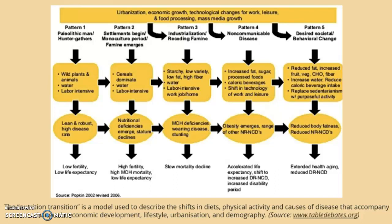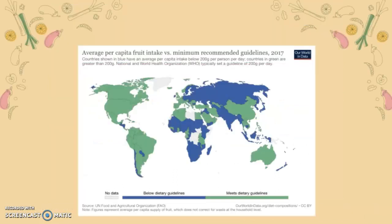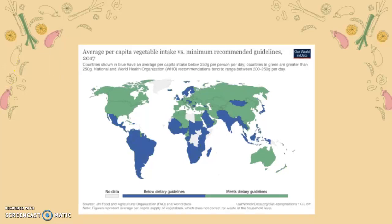Looking at patterns of nutritional intake, the average per capita fruit intake versus minimum recommended guidelines shows countries below dietary guidelines are centralized in Asia, Eastern Europe, parts of Africa, and some of South America. For average per capita vegetable intake, countries below dietary guidelines include most of South America, most of Africa, quite a bit of Asia, and parts of Europe.